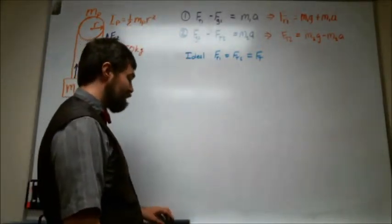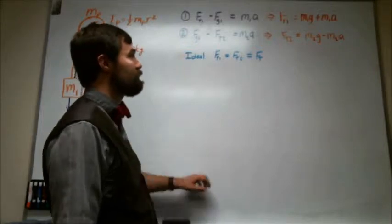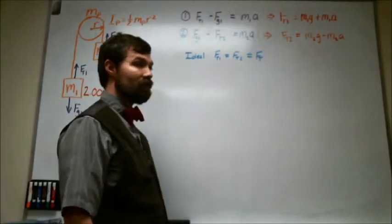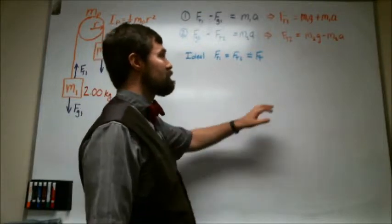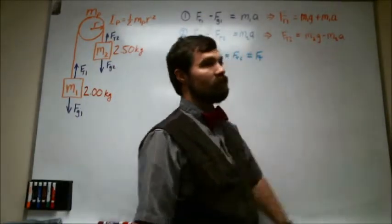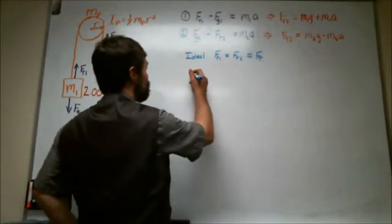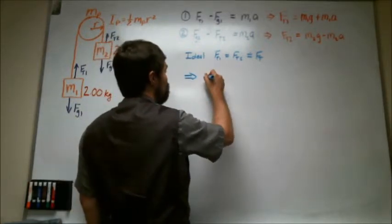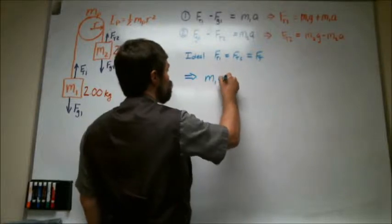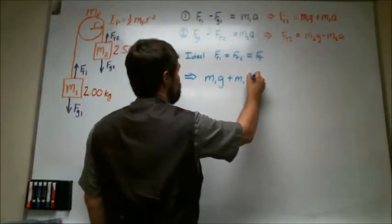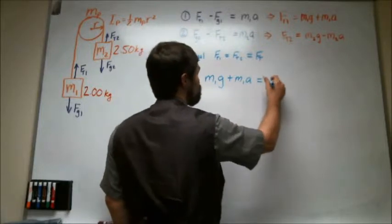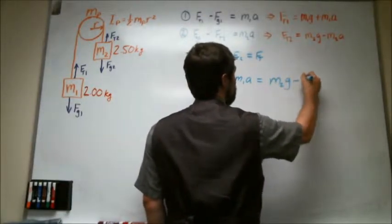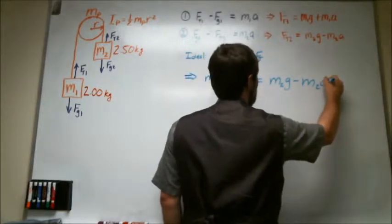So to solve, basically we can set these two forces of tension equal to each other, and that means that the right hand sides of these two equations are going to be equal to each other. So this basically means that m1g plus m1a is going to be equal to m2g minus m2a.